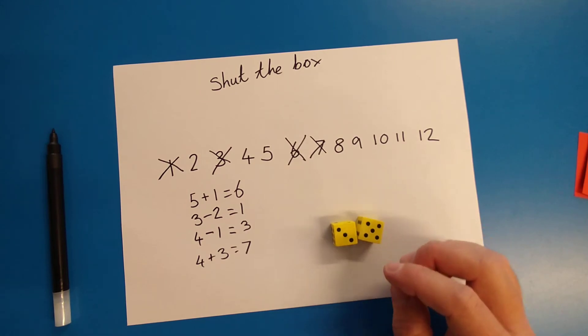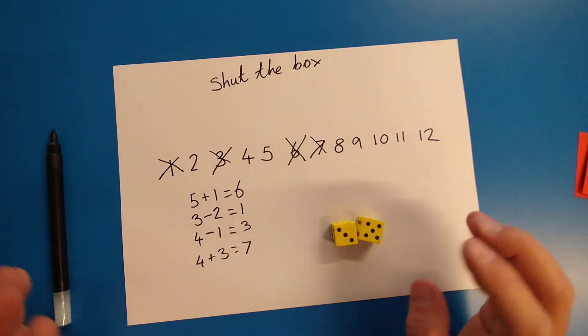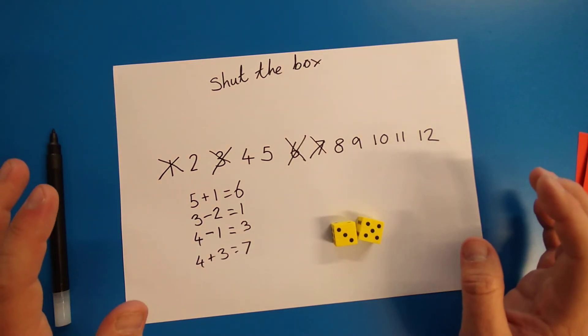A really fun way of doing this is to play against someone, whether it's mum, dad, brother, sister, uncle, auntie, cat, dog, whoever can do maths. If they can add these two numbers together, they can play. Oh, my goodness. It started raining really heavily here.